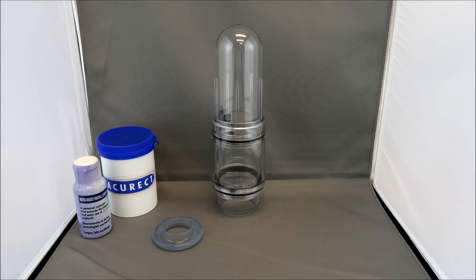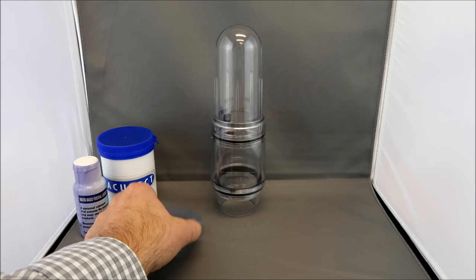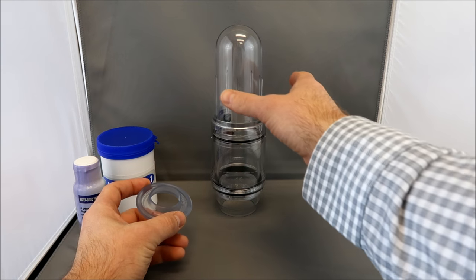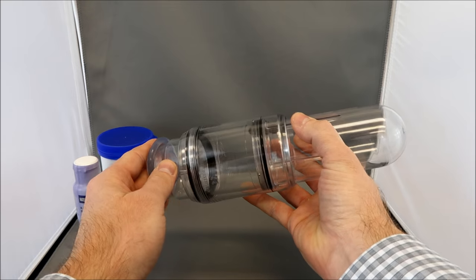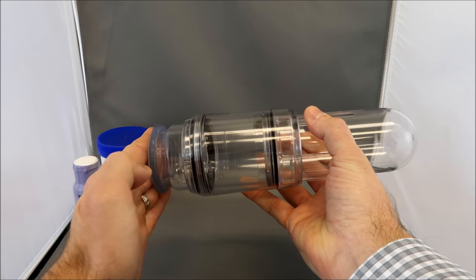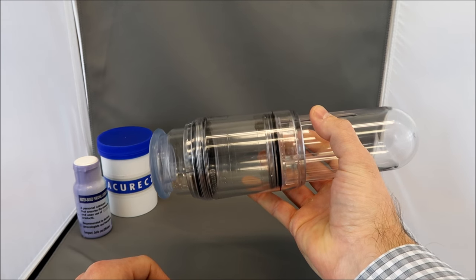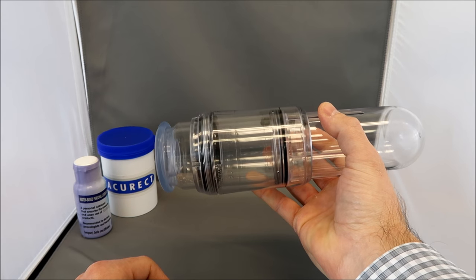The first thing you will do is start with the largest size tension system and place it on the opening of the cylinder. It will fit on the opening just like when you put a lid onto a coffee cup.